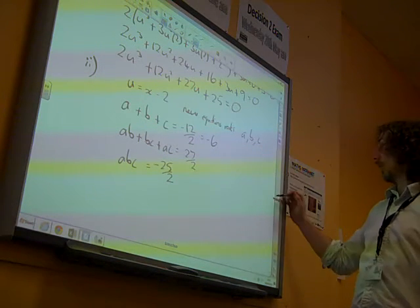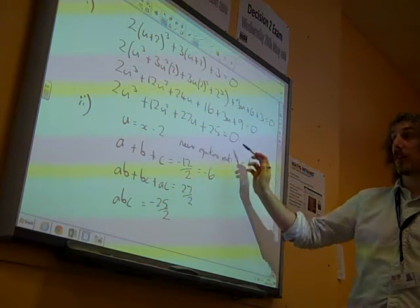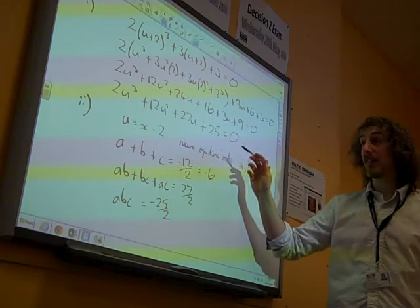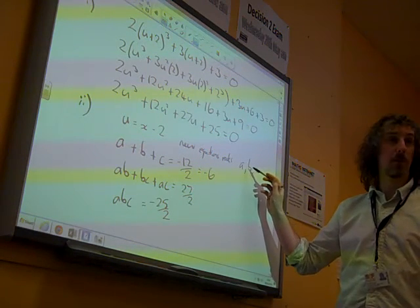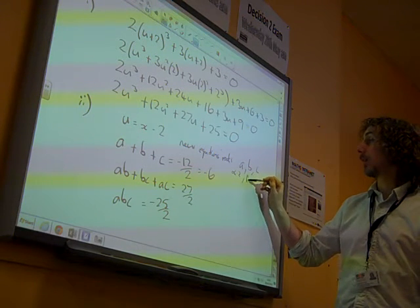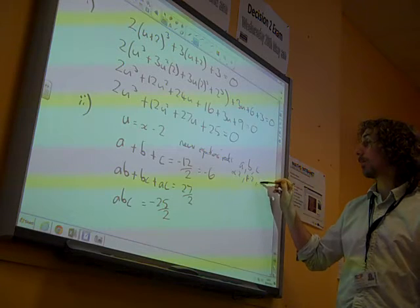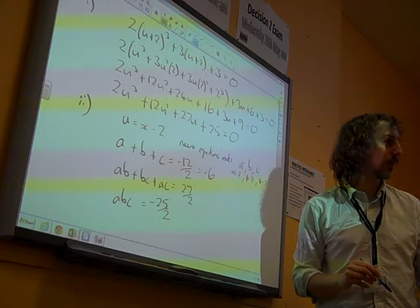Now, 1 over what we're looking for, because a is a root of this new one, a is alpha minus 2, and b is beta minus 2, and c is gamma minus 2. Okay, because that's how they relate to the original equation.